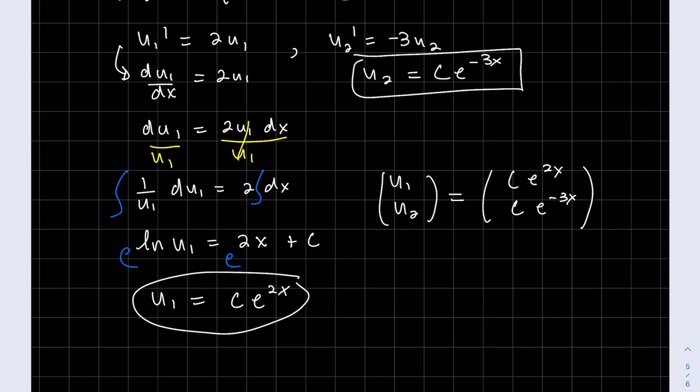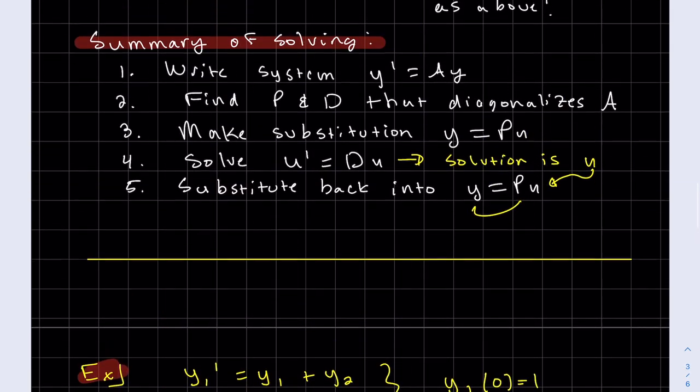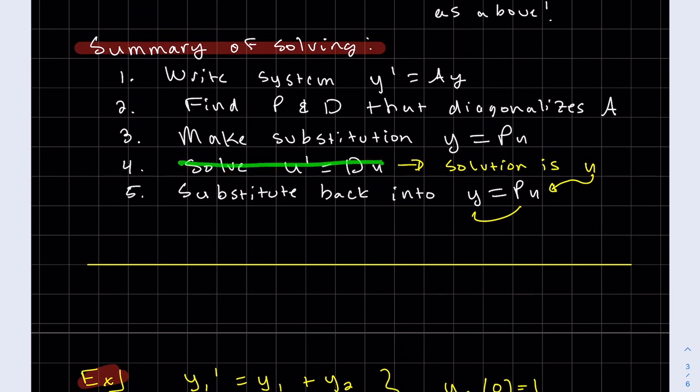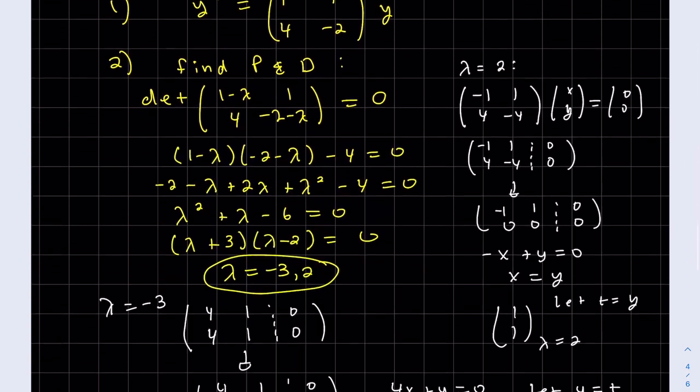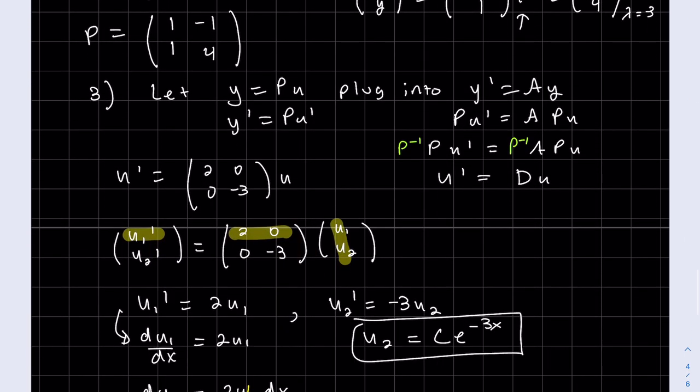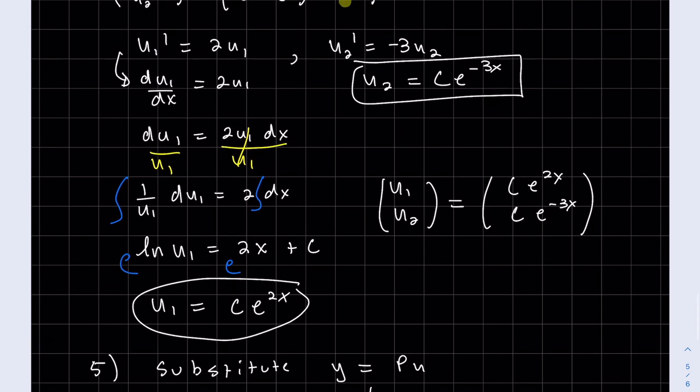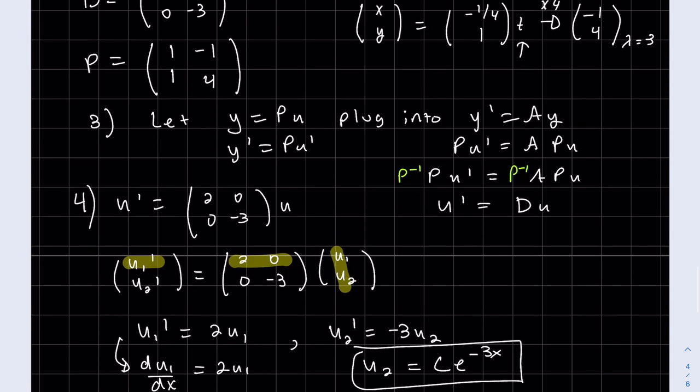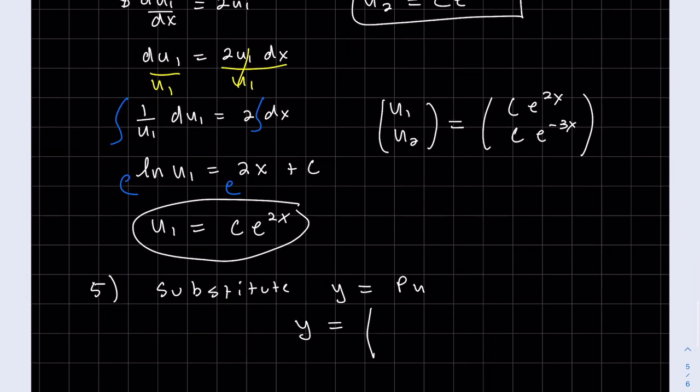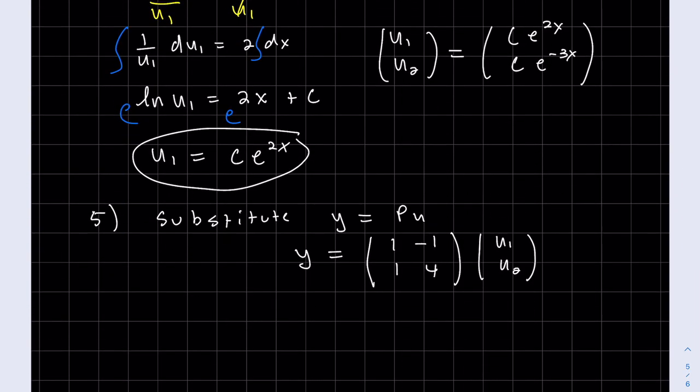So we solved for u. And then step 5 is substitute back into y equals Pu. And we're done. So 3 was my y equals Pu. 4 was solve for u. And 5 is substitute back into my P, 1, 1 right here, minus 1, 4. And so we have our u_1, u_2. We just substitute it back into there.